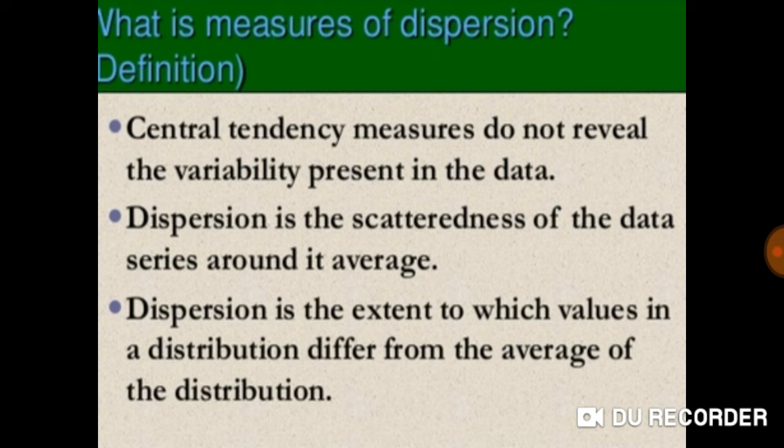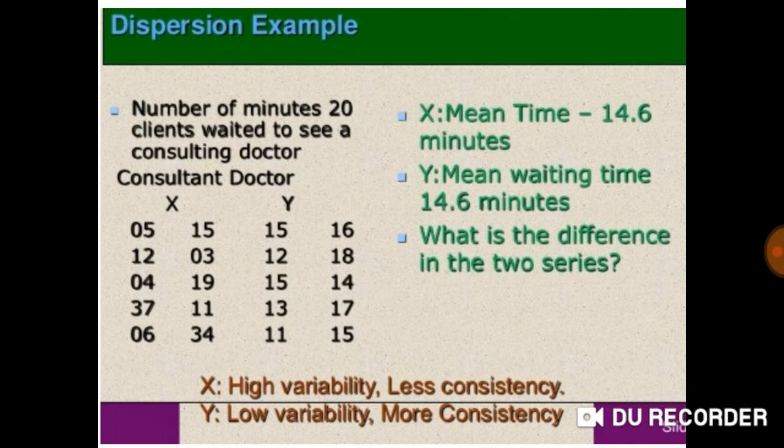Now dispersion example. Number of minutes 20 clients waited to see a consulting doctor. Consultant doctor values of X: 5, 12, 4, 37, 6, 15, 3, 19, 11, and 34. The values of Y: 15, 12, 15, 13, 11, 16, 18, 14, 17, 15.